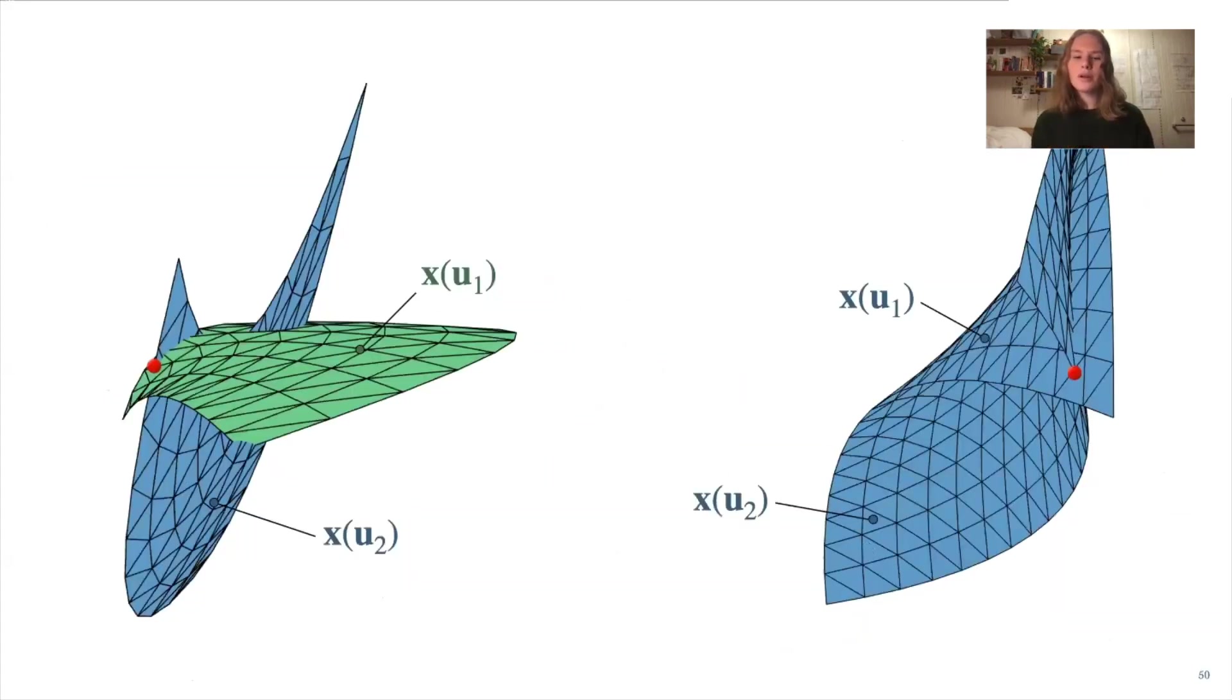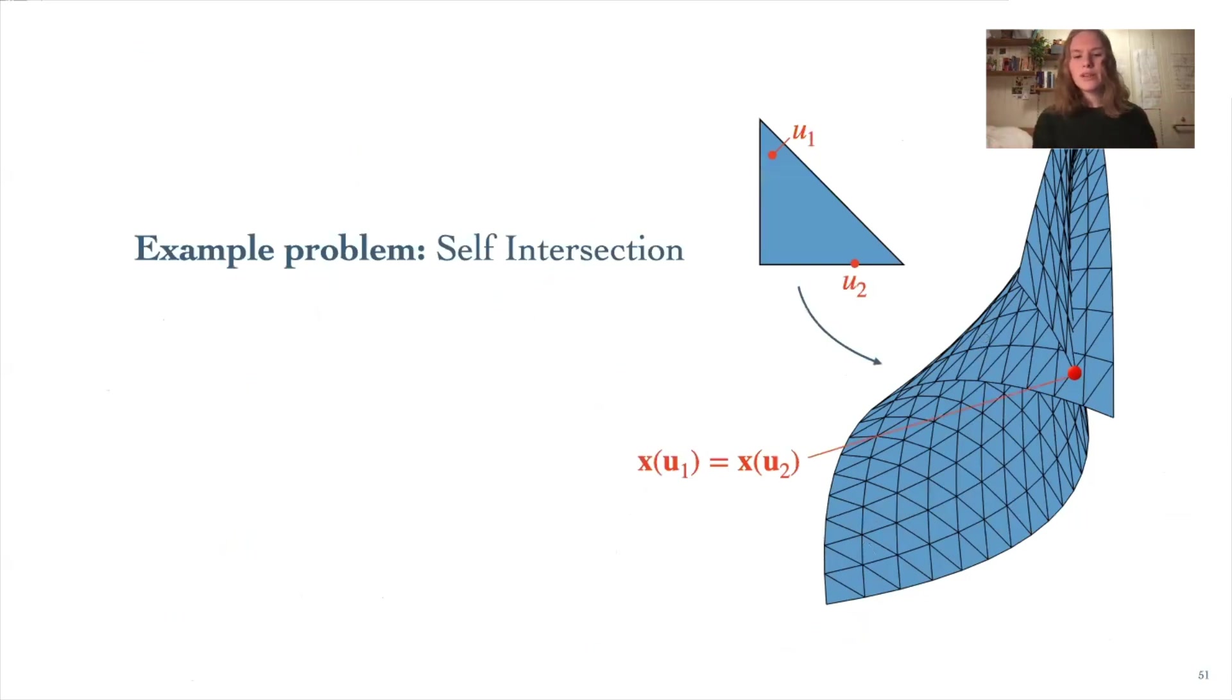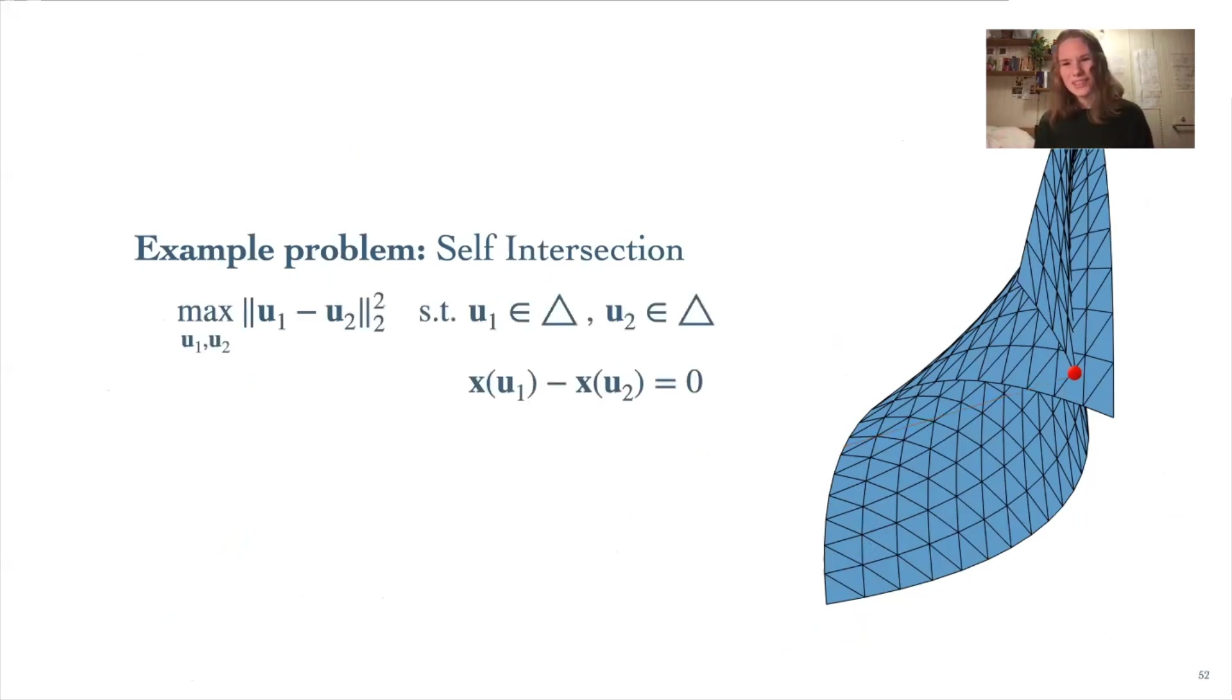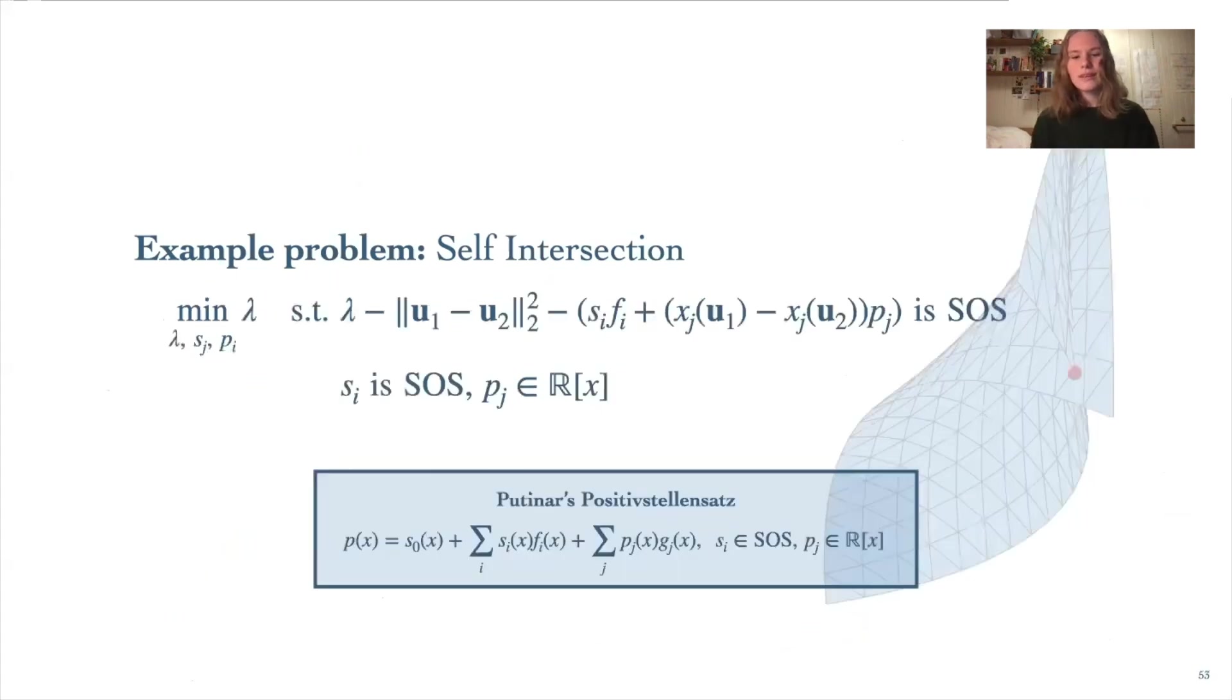Now let's look at problems where we have two points that we are optimizing over. Either points on different patches, like in the surface-surface intersection, or on the same patch, like in the self-intersection. Let's look a little bit closer at the self-intersection problem. We have a self-intersection in our patch when two distinct points in the base domain map onto the same point. We can formulate the optimization problem like so, where we look for points maximally separated on base domain that map onto the same point. If there's no self-intersection, this optimization problem will simply yield zero, with all pairs of points being optimal.